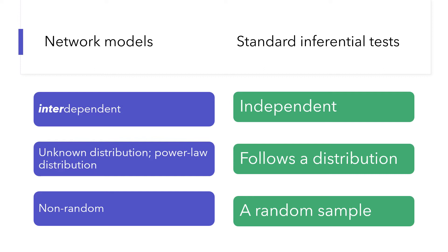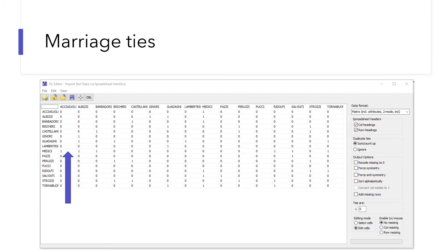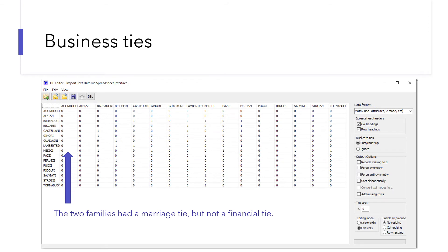One way is CREP correlation. This is a network dataset about the social relationships among Renaissance Florentine families. The data were collected by John Padgett using historical documents. In the matrix, the rows and columns represent Florentine families during the Renaissance. This is a matrix that displays marriage ties. One means a marriage relationship between two families. We have another matrix that displays business ties, where one means a business relationship between two families.